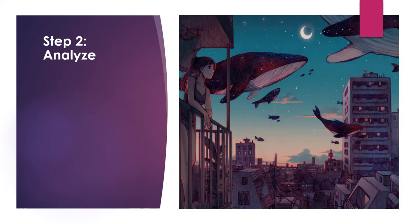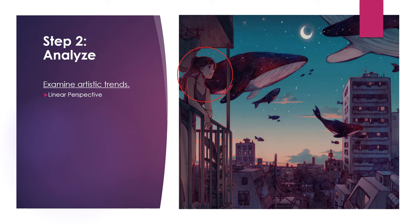Let's move on to step two, analyze. Here we will examine artistic trends or the tools used to create art. Linear perspective is used because the girl is closest to us, so we can see her details better. The further back we go in the picture plane, the whales begin to fade and look like fish shapes — we can't make out any of their details at all. There's also movement implied because the whales look like they're flying through the piece.